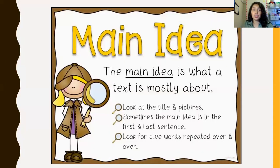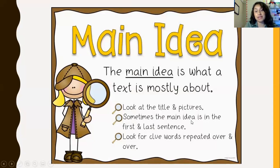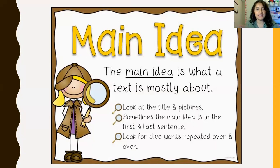The main idea is what the text is mostly about. Some clues to finding the main idea: look at the title and the pictures. Sometimes the main idea is in the first and last sentence — this is often the case at this grade level, which is third grade. When you get older, the main idea might be somewhere else in the text, so we really need to pay attention to our reading.